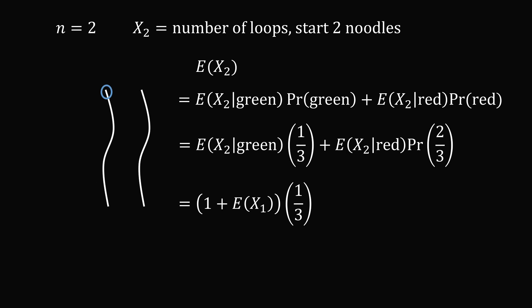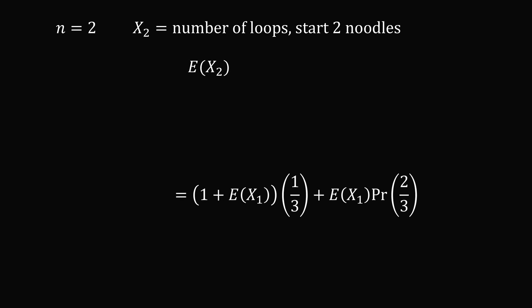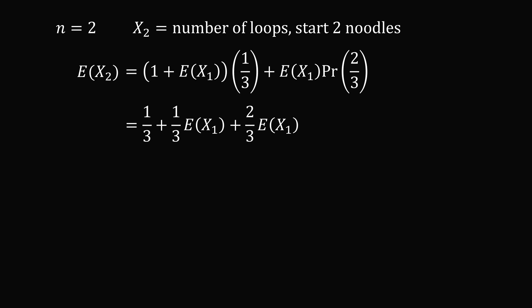Now let's work out what happens if we select a red cross instead. Selecting a red cross connects two ends from different noodles, creating one much longer noodle. We haven't created any loops, but we're left with one noodle. So E[x2 | red] equals E[x1]. Simplifying: distribute the 1/3, and we get 1/3·E[x1] plus 2/3·E[x1], which equals E[x1]. Therefore E[x2] equals 1/3 plus E[x1], and since E[x1] equals 1, this gives us 1/3 plus 1. I'll leave it in this summation form so we can see the pattern later.